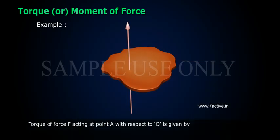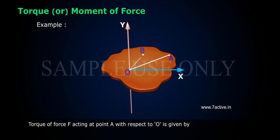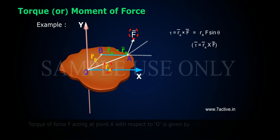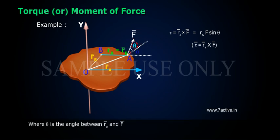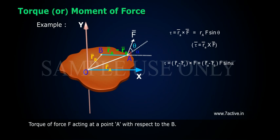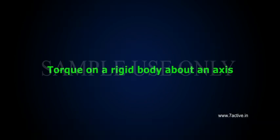Example 1: Torque of force F acting at point A with respect to O is given by: tau equals R_A cross F, which equals R_A times F sin theta, where theta is the angle between R_A and F. Example 2: Torque of force F acting at point A with respect to point B is given by: tau equals (R_A minus R_B) cross F.